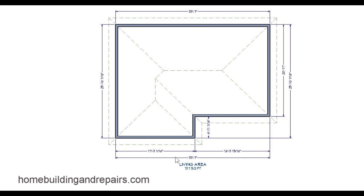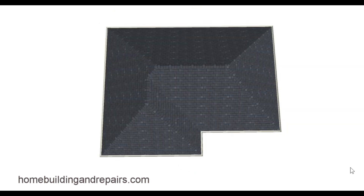The addition would go from about here over. What we have here is a hip roof with a valley and then another hip and a ridge. So we have a ridge, a hip, and then a valley. Let's take a look at it.